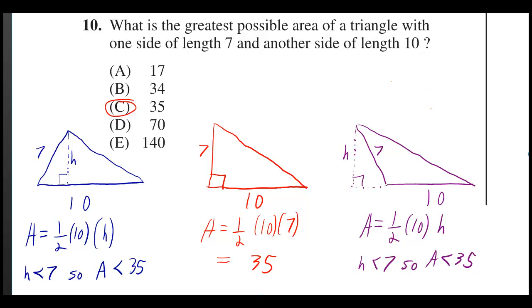What is the greatest possible area of a triangle with one side of length 7 and another side of length 10? Well, you can have three different kinds of triangles.